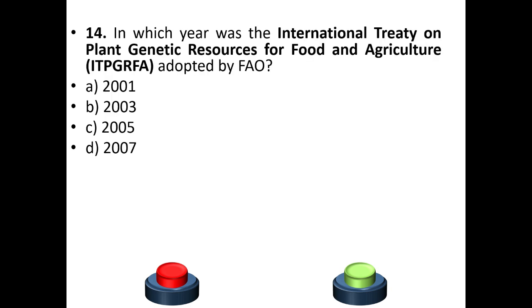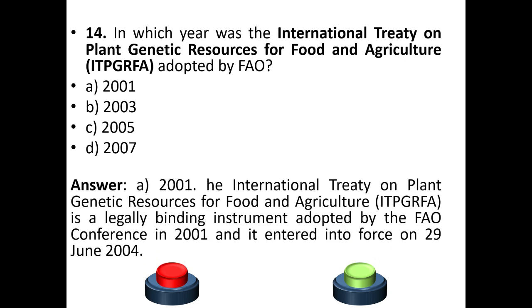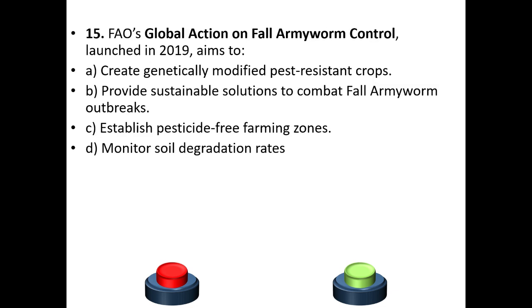Question 14: In which year was the International Treaty on Plant Genetic Resources for Food and Agriculture adopted by FAO? Options: 2001, 2003, 2005, or 2007. The answer is option A — 2001. The treaty is a legally binding instrument adopted by the FAO Conference in 2001 and entered into force on 29th June 2004.